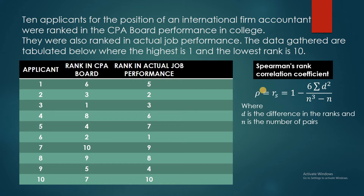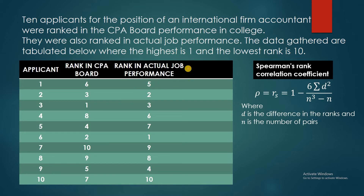This is the formula. This is the Greek letter rho, written as ρ or R sub S. It equals 1 minus the quotient of 6 times the summation of D squared, divided by N cubed minus N. D is the difference in the ranks and N is the number of pairs. The N here is 10 because there are 10 pairs. We're going to take the difference of the ranks.